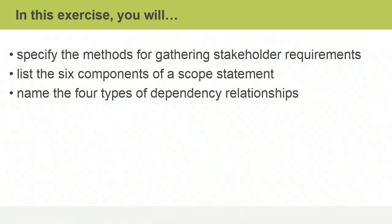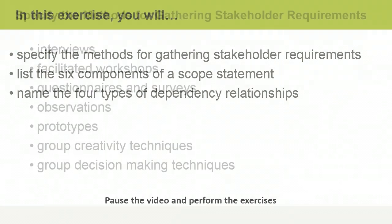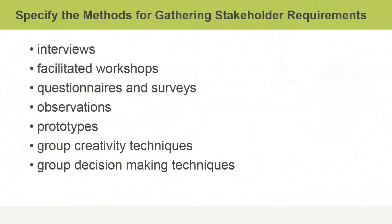In this exercise, you will specify the methods for gathering stakeholder requirements, list the six components of a scope statement, and name the four types of dependency relationships when sequencing activities. You may pause the video and perform the exercises. When you are finished, you may resume the video to check your answers.